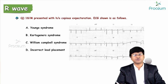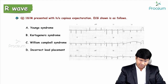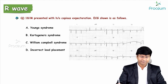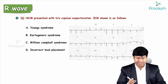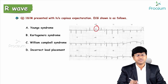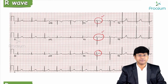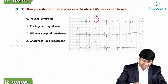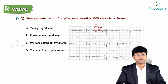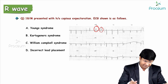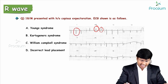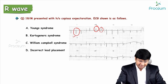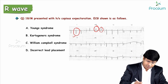MCQ: 18-year-old male presented with history of copious expectoration. ECG shown. Options: Young's syndrome, Kartagener's syndrome, William-Campbell syndrome, incorrect limb placement. The abnormality in this ECG is dominant R wave in AVR — normally AVR is completely a negative complex. Additionally, there is global negativity in lead I (P wave, QRS, and T wave all negative), and absent R wave progression in the chest leads — dominant S wave throughout V1 to V6.